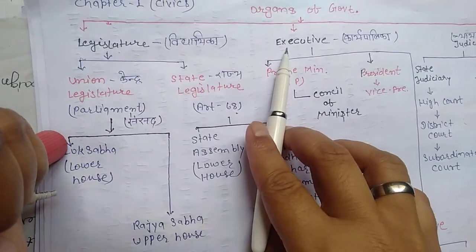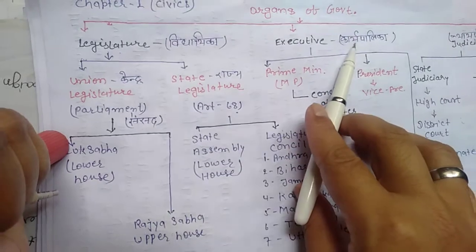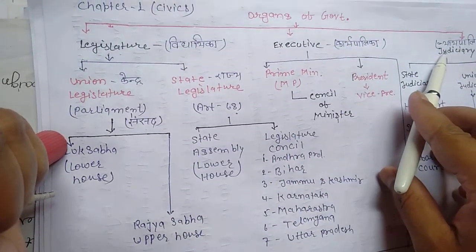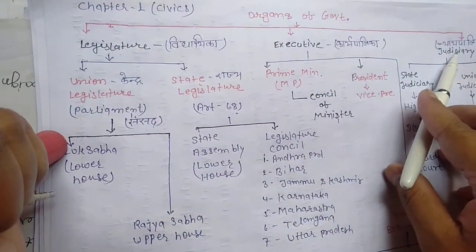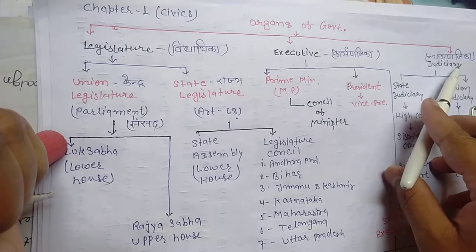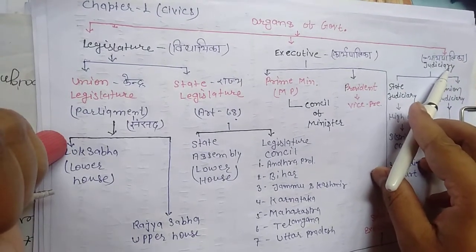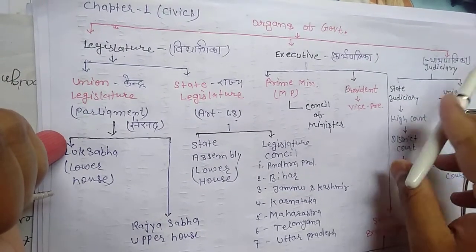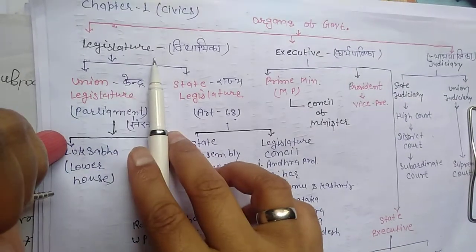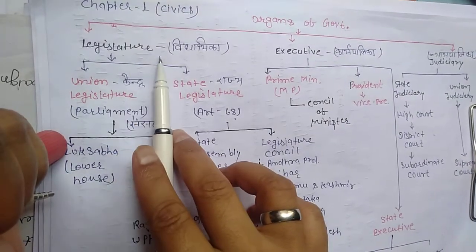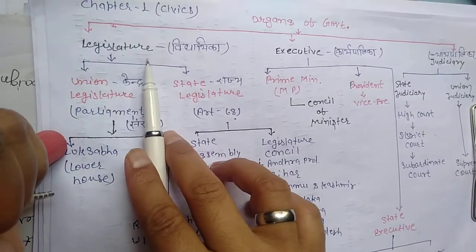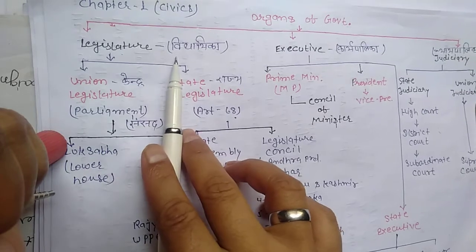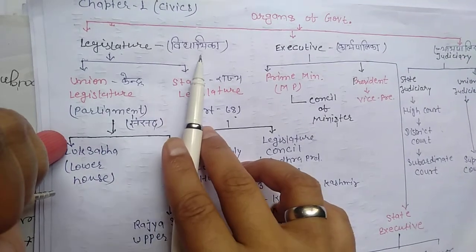the Executive, and the Judiciary. Legislature means lawmaking — this is a lawmaking body.